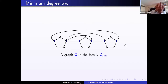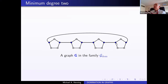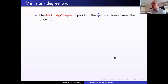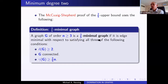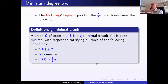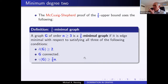The proof technique uses edge-minimal graphs: a graph is two-fifths edge-minimal if it has minimum degree at least two, is connected, and the domination number is at least two-fifths. You remove edges until you have such a minimal graph — any further edge removal would drop the minimum degree, disconnect the graph, or drop the domination number. You then prove properties of these minimal graphs, characterize them, and deduce the main result.